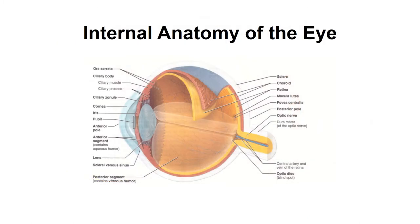Let's highlight the structures we need to know. We need to know the ciliary body and the ciliary zonule — another word for this is the suspensory ligament. We also need to know the cornea, which is the transparent portion of the eye; the iris, which is the colored portion; the pupil, which appears black and is the hole of the eye; and the lens, which is inside the eye.